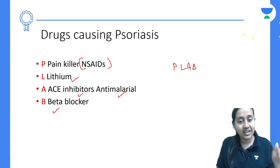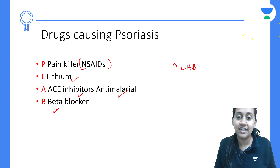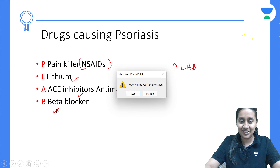So the mnemonic for drugs causing psoriasis is PLAB. Thank you all — let's crack it! Use the code CHESHTA10 to get your subscription today.